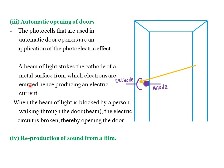A beam of light strikes the cathode, photoelectrons are emitted and produce an electric current, which magnetizes the electromagnet — attracting the north and south poles on each door part to keep the door closed. When a person blocks the beam, the electric current circuit is broken, the electromagnet loses magnetism, the attraction is broken, and the door opens.